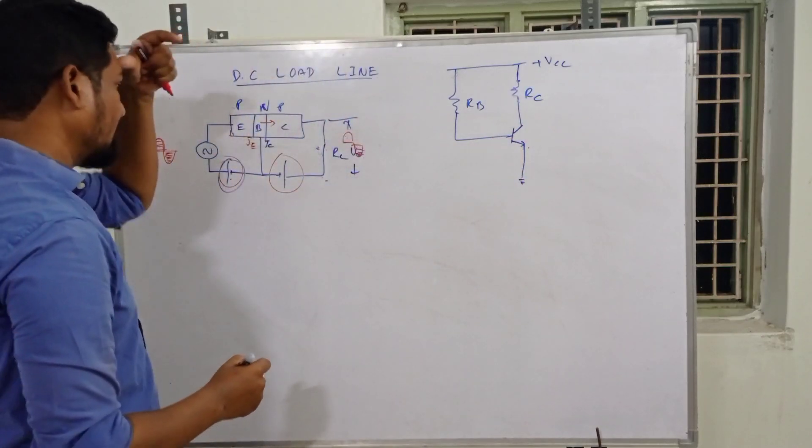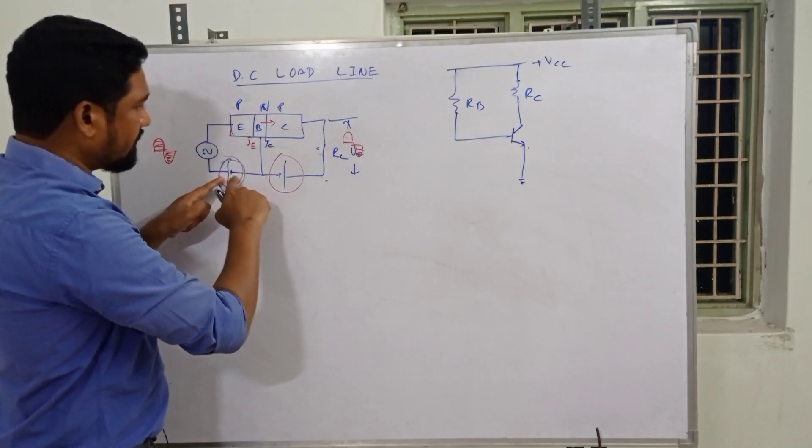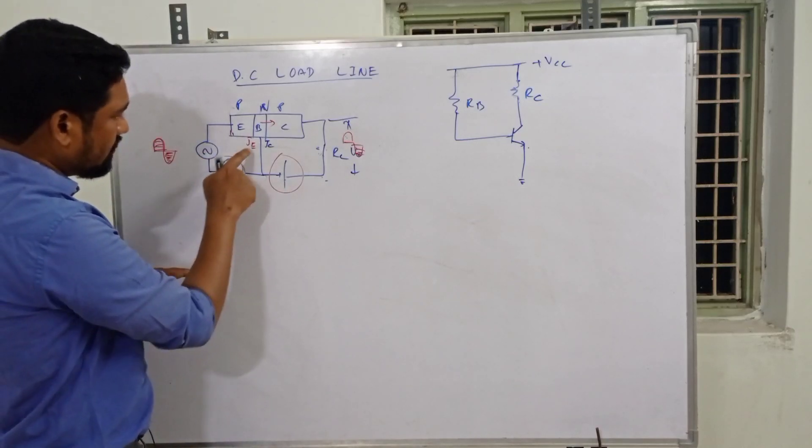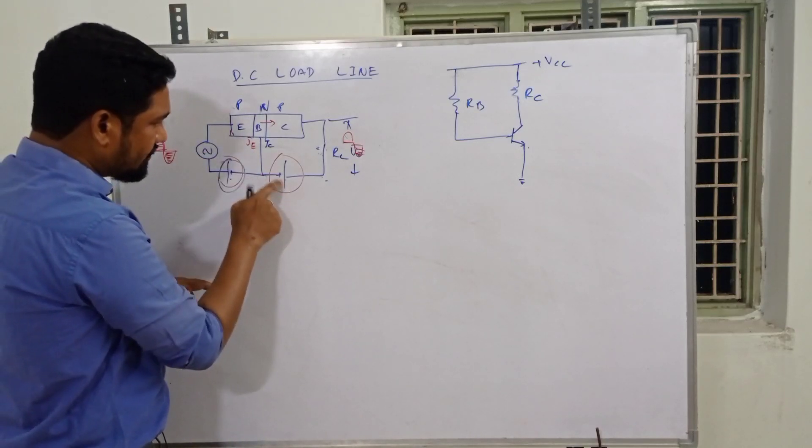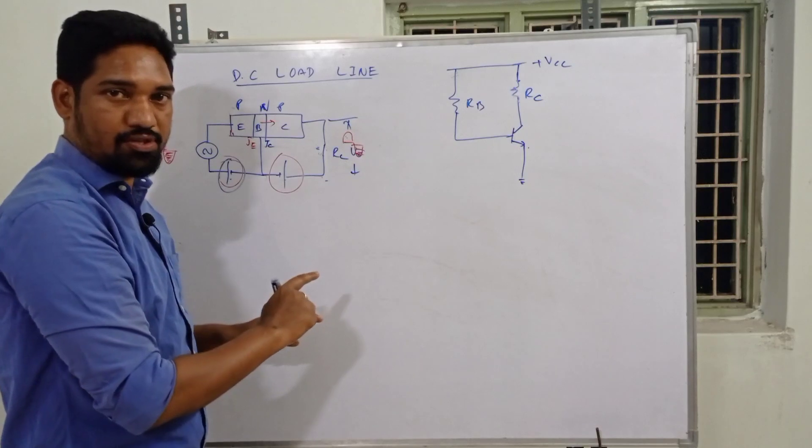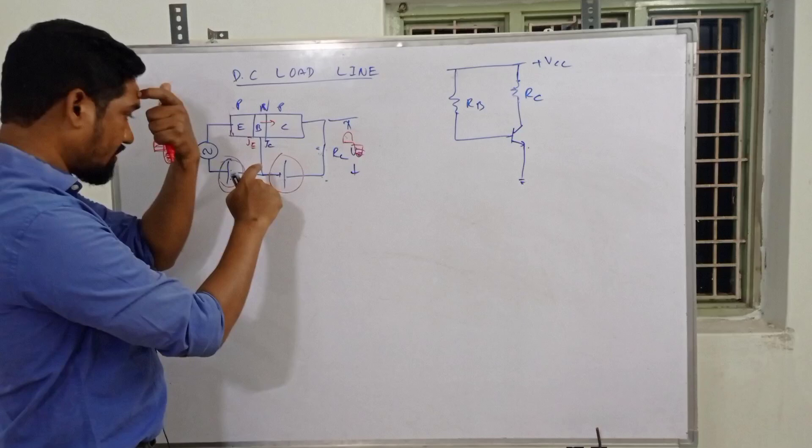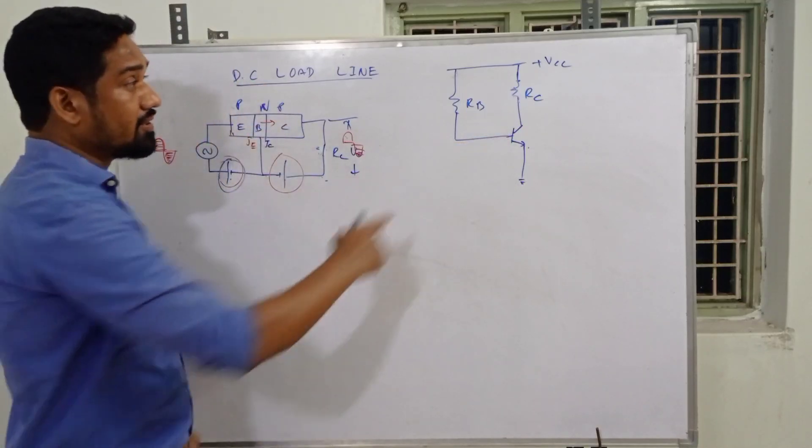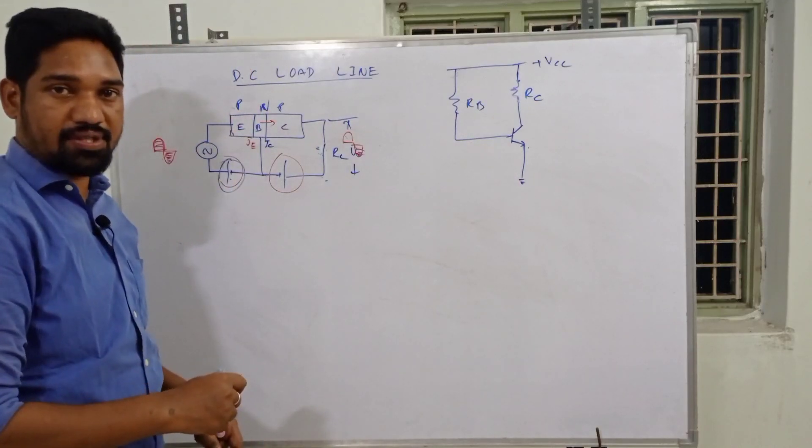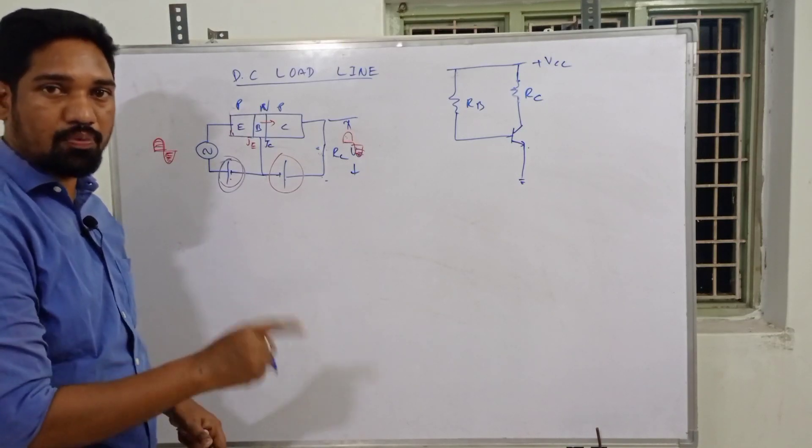The purpose of load line analysis is: when we do this biasing arrangement to keep the emitter junction forward biased and collector junction reverse biased for faithful amplification, what DC voltage is established across the transistor? What current flows? That information can be extracted from the DC load line.